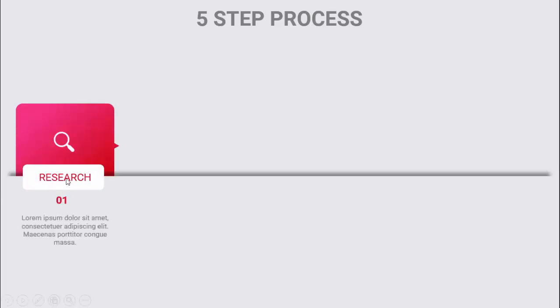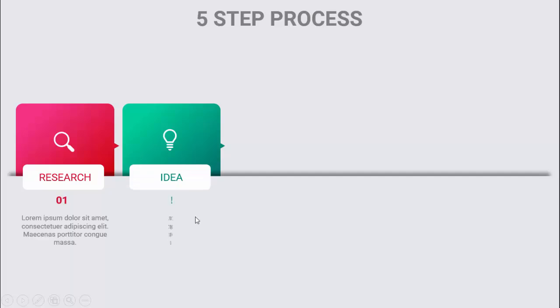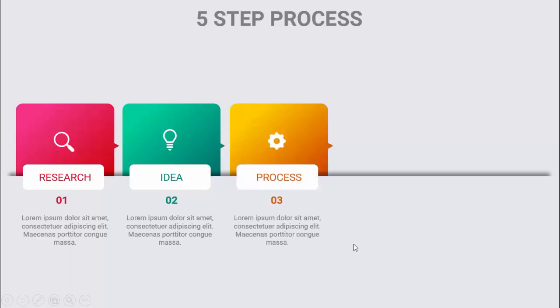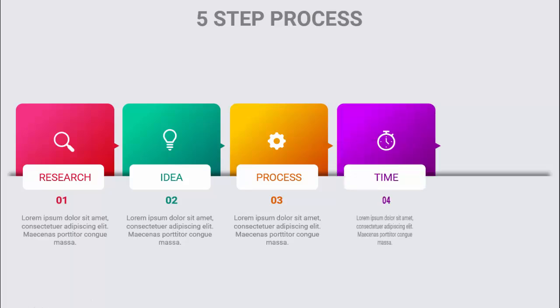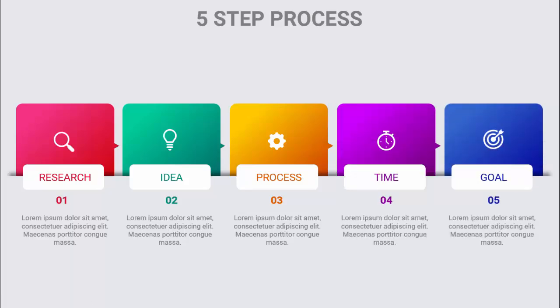In today's tutorial I'm going to show you how to create a five-step process infographic slide in PowerPoint. Here's how the slide works: when I click, the first step comes in where I've put the text 'Research'. You can add the option number and detailed text. The second step comes with a different color combination and I've added the idea icon. Then option two and the text, then option three which is 'Process', option four, and the last option is 'Goal'.